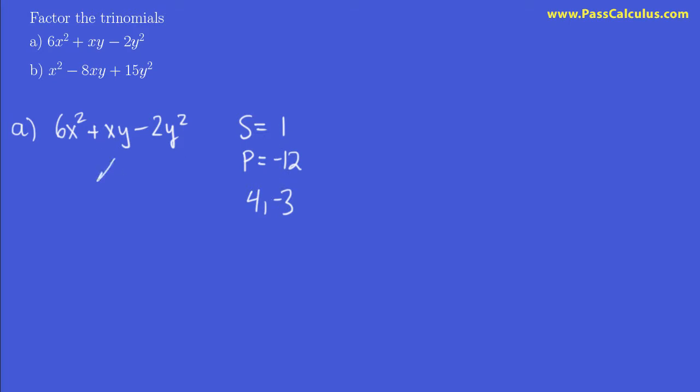So our strategy just like before is we're going to break up this middle term, which is 1xy, and we're going to break it up into 4xy minus 3xy. This term here, 6x squared, is going to stay still and so is the minus 2y squared. So 1xy becomes positive 4xy minus 3xy and minus 2y squared is trailing along on the end unchanged.